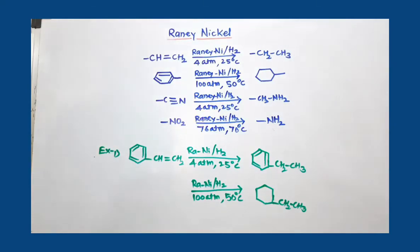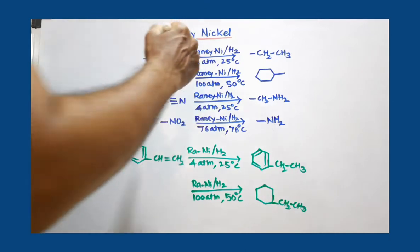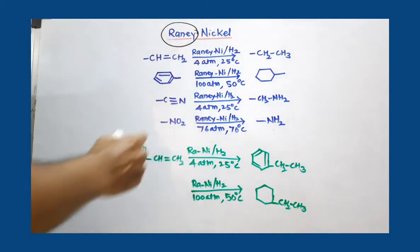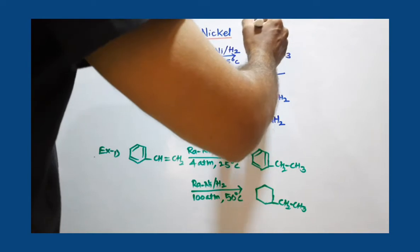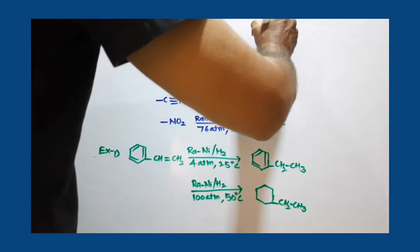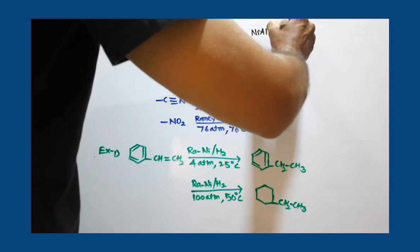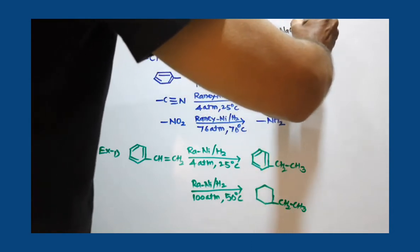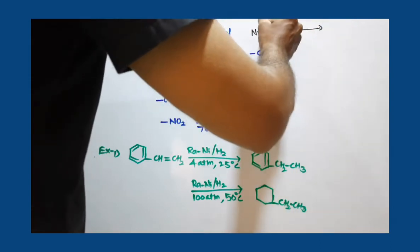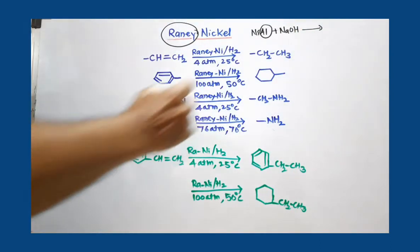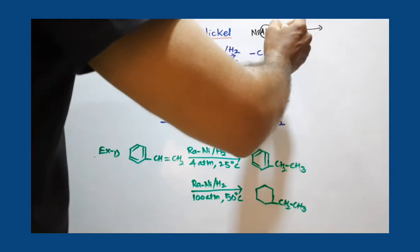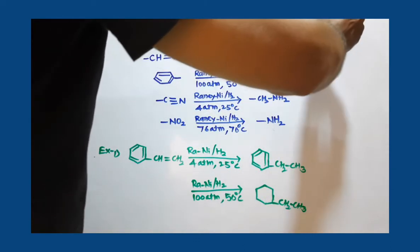Raney Nickel - this catalyst is used for reduction, and we call it Raney Nickel because of Raney. This is the name of the scientist, and this nickel is prepared from the nickel aluminum alloy. When this nickel aluminum alloy is dissolved in sodium hydroxide, the aluminum part of this alloy is dissolved in NaOH and we get a fine powder of nickel.